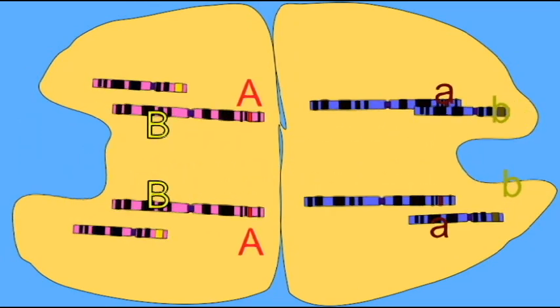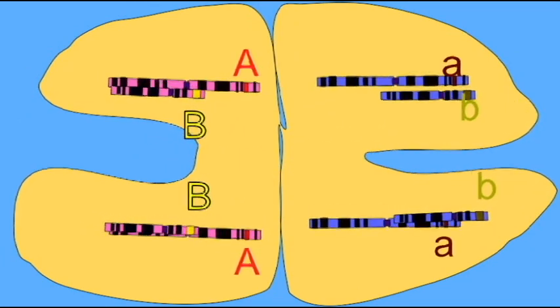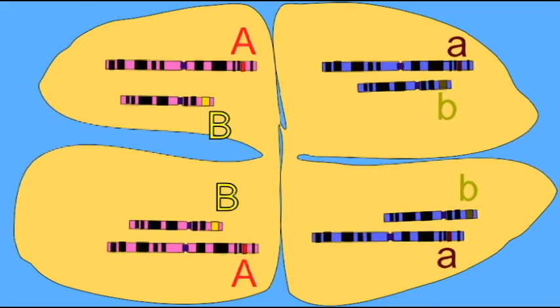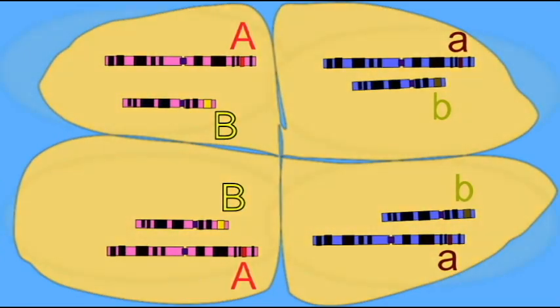While other gametes have the opposite. And thus, independent assortment creates a great diversity in the gametes which are produced.